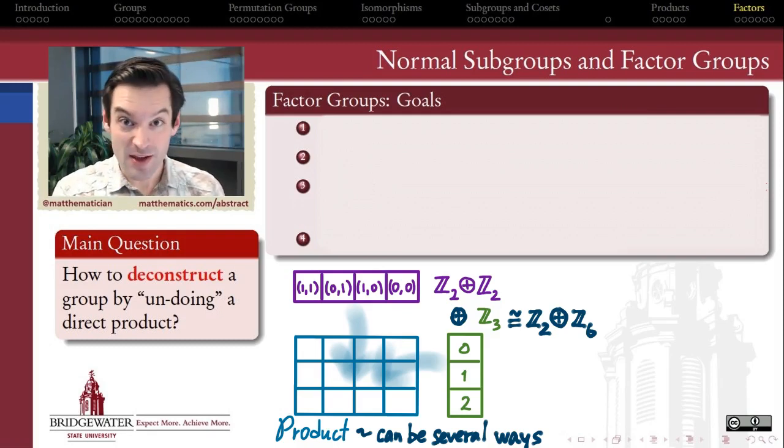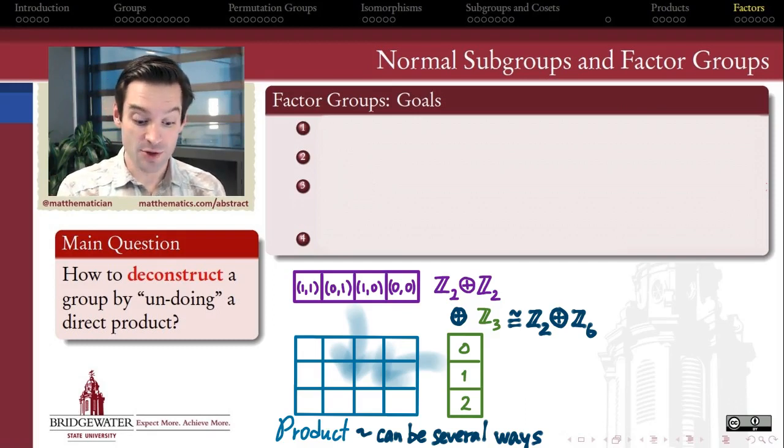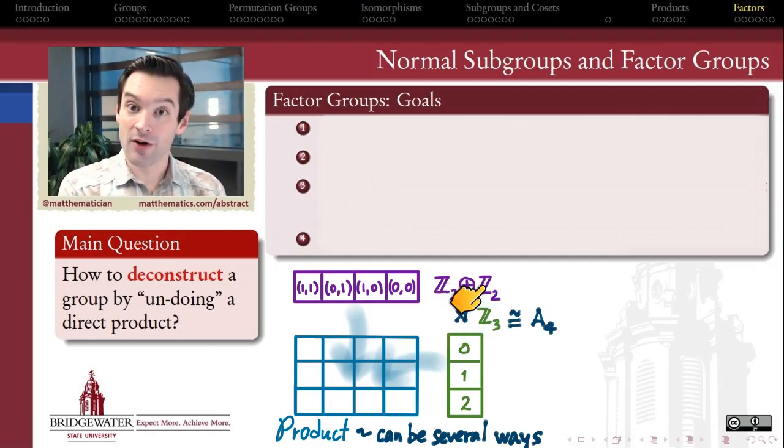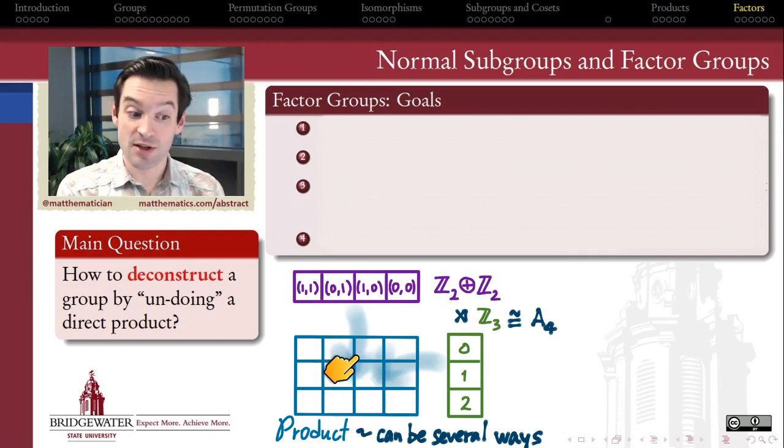But the external direct product is not the only kind of product construction that can turn two smaller groups into a larger one. There's also what we call the semi-direct products, which is a way of taking two groups and intertwining their operations one with another in a systematic fashion in a way that can make an even more interesting structure on the products of elements here than we had in the original groups.